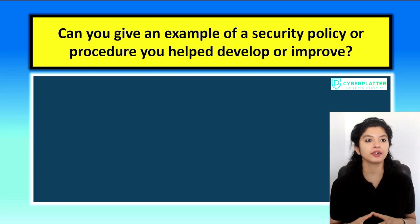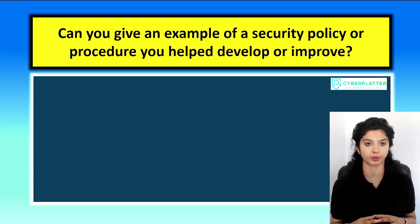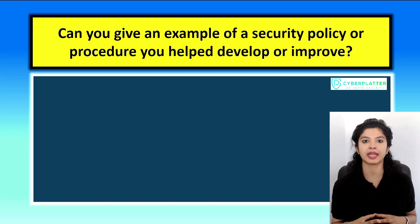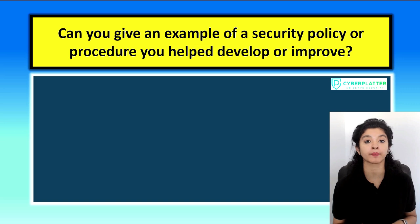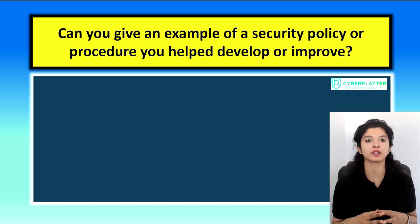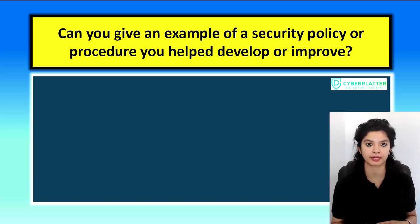Next question: can you give an example of a security policy or procedure you helped develop or improve? For this, you can pick up a policy area that's widely relatable, like for example incident response, password or MFA policy, data handling, or patching SLAs. By choosing these, even if the interviewer is not deeply technical, they'll immediately see the value in it.